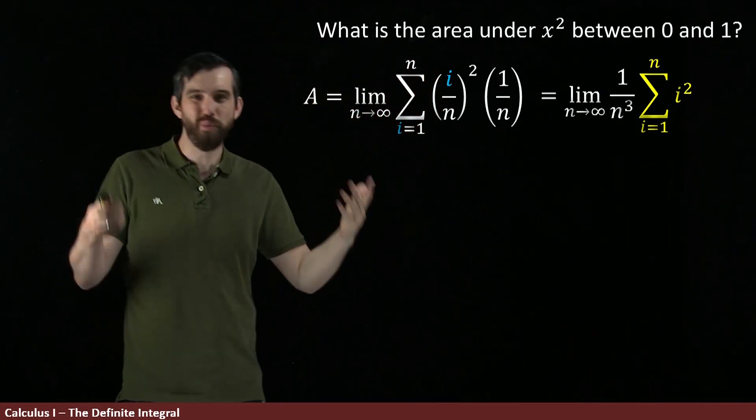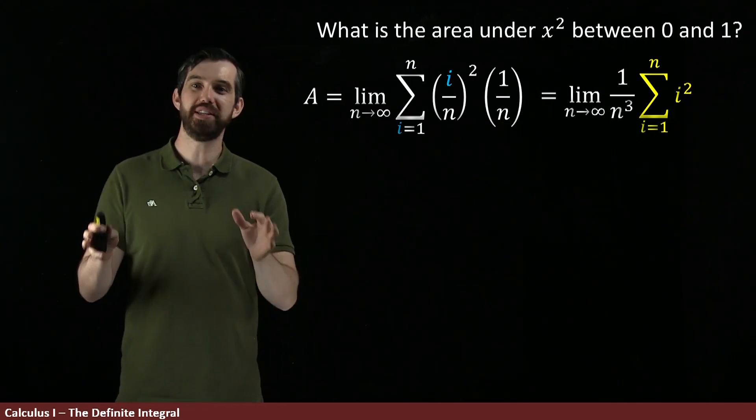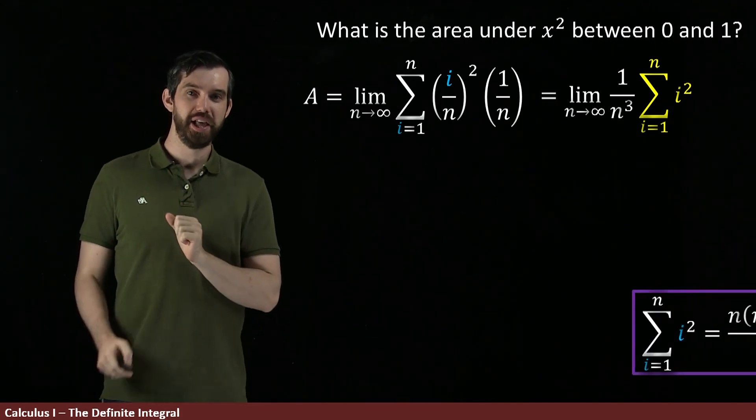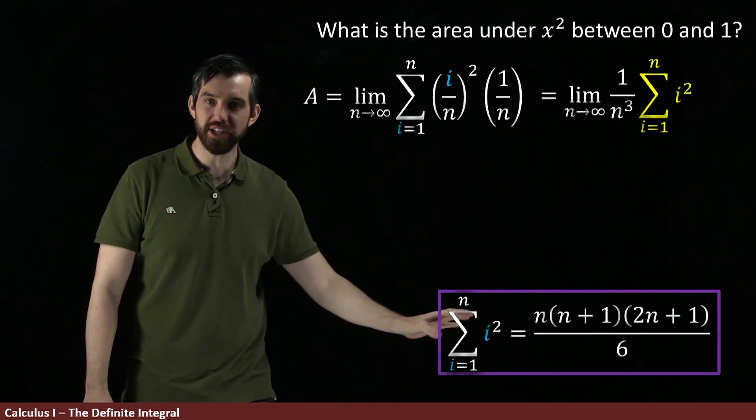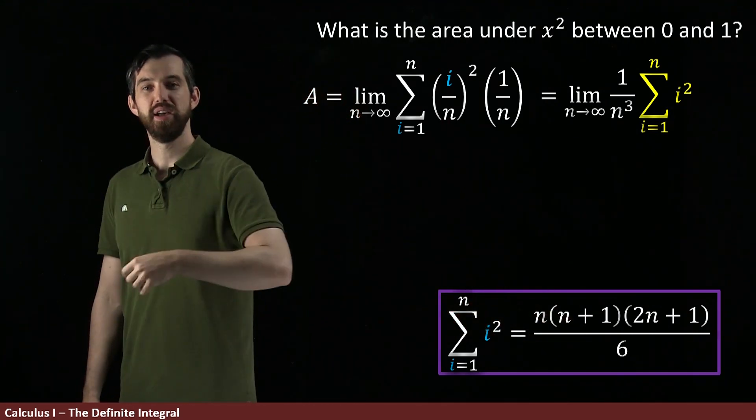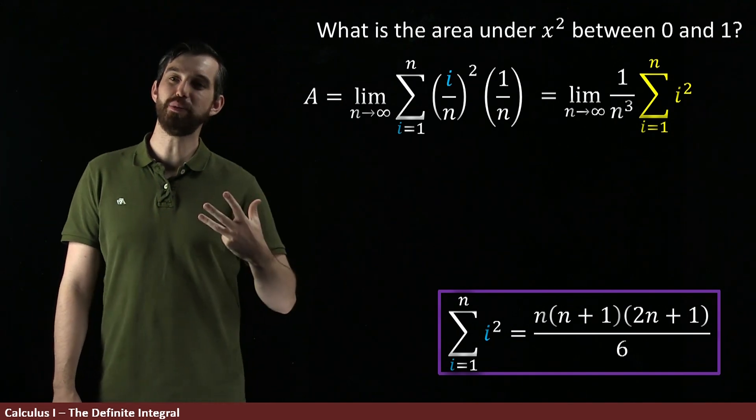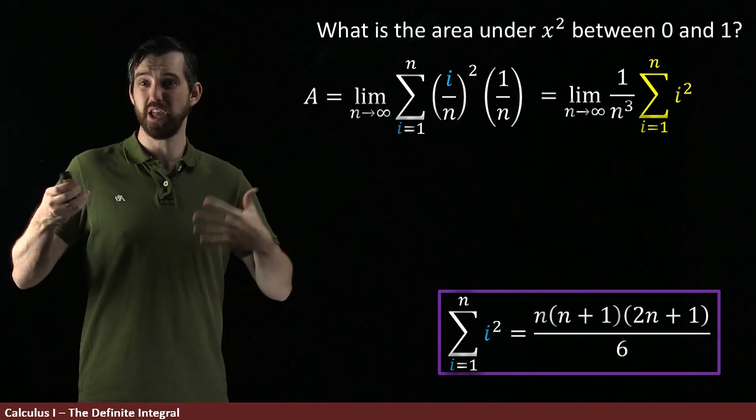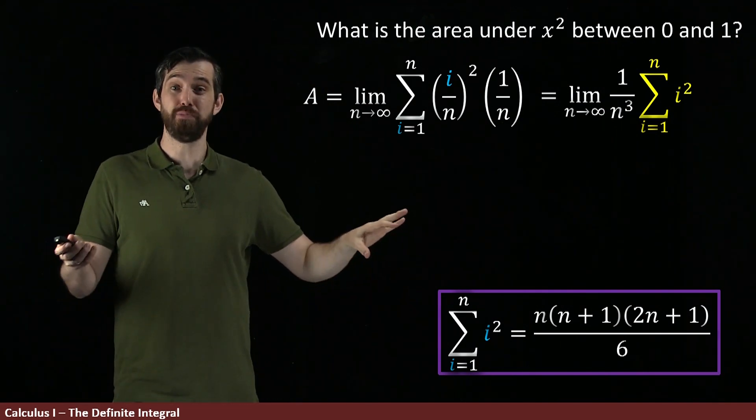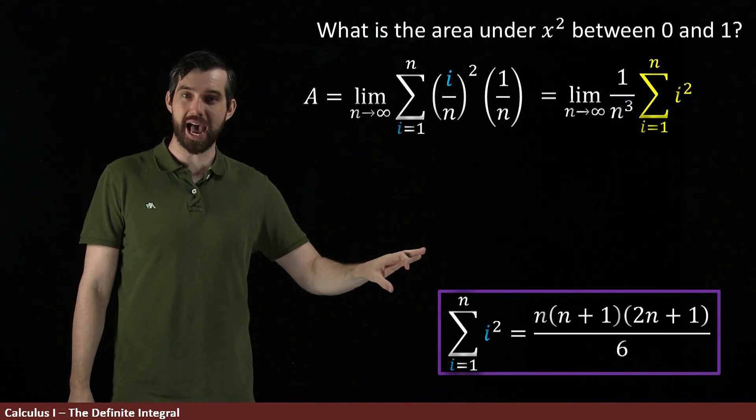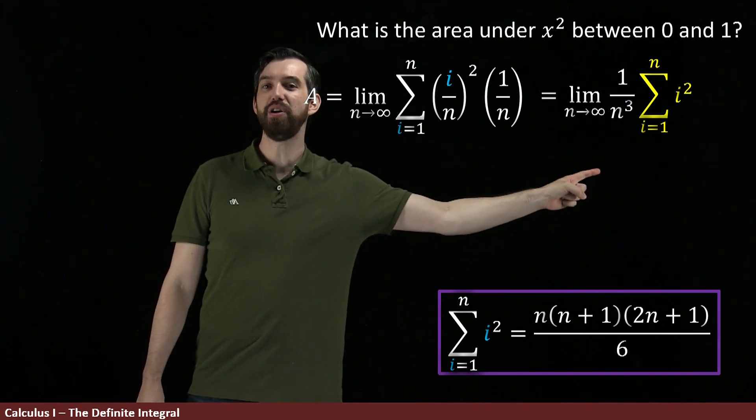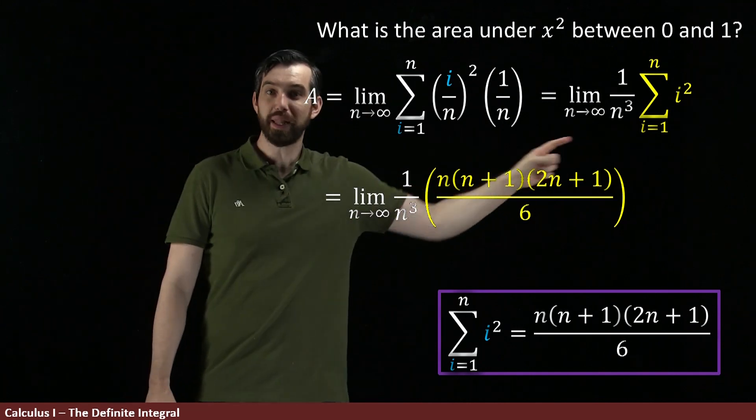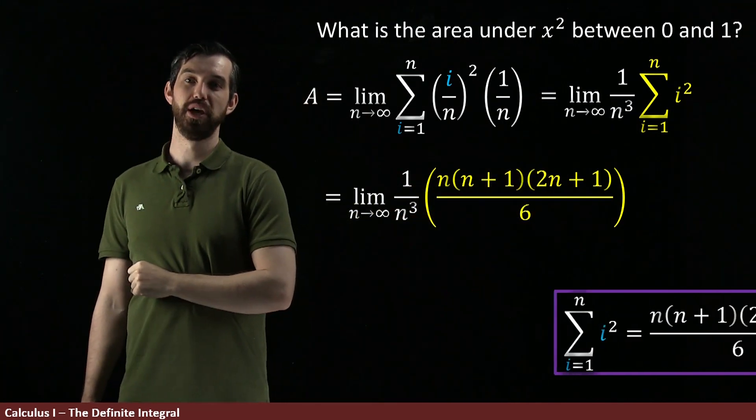Okay, so what's the sum from 1 up to n of i squared? Now, I'm going to cite a fact for you, and I'll put a link in the description of where you can go and find a proof for this. That sum, the sum from 1 up to n of i squared, is just equal to this nice expression: n times n plus 1 times 2n plus 1 all divided by 6. You can prove this with something called mathematical induction. So I'm going to use that to help me evaluate what I have right here. Indeed, I can say it's the limit as n goes to infinity of 1 over n cubed, and now I've just replaced my sum with this result.